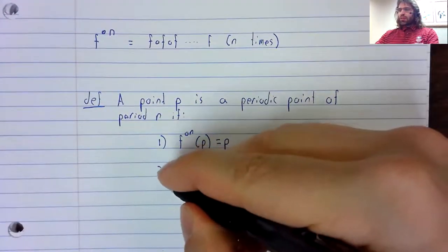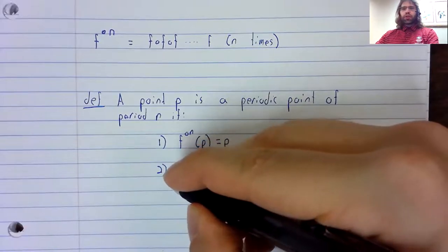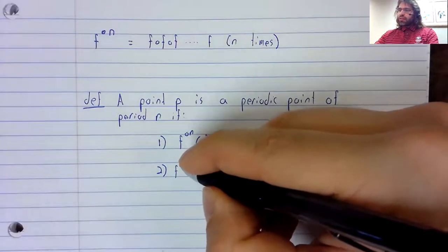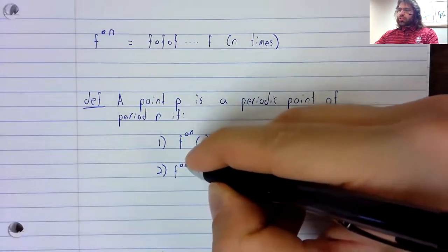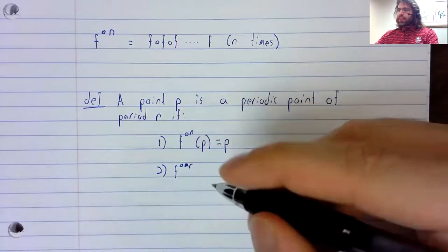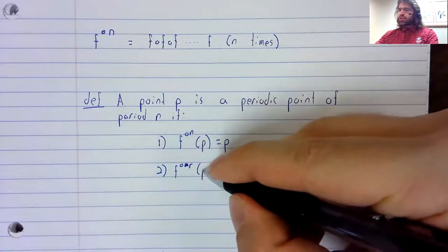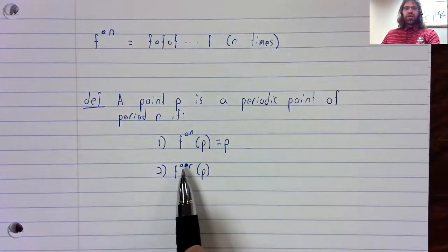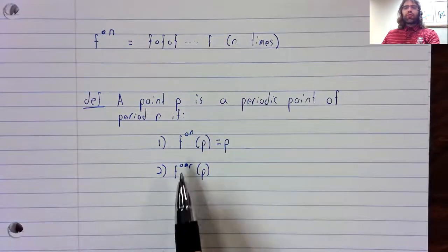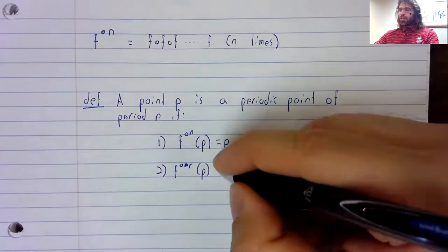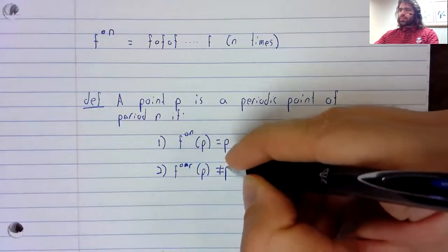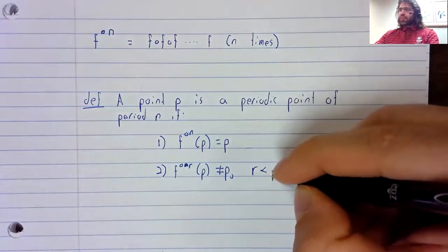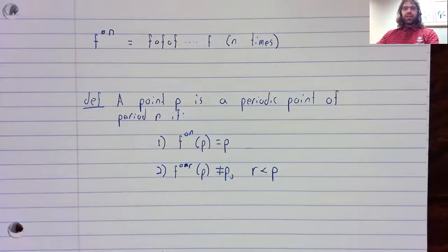But there is another requirement as well. So this is not a fixed point of the composition of F with itself r times, if r is less than n.